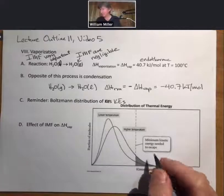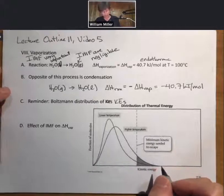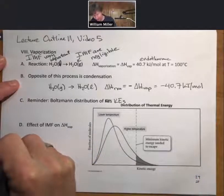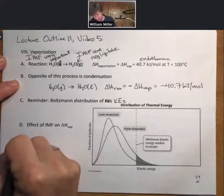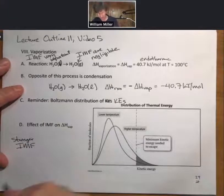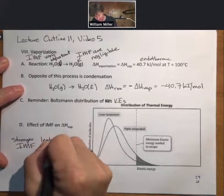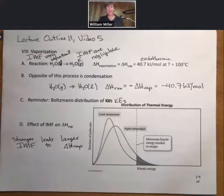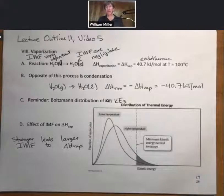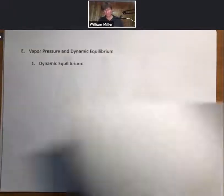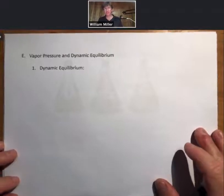A stronger IMF leads to larger delta H vaporization. Delta H vaporization is one of the properties we started talking about as being proportional to intermolecular forces.